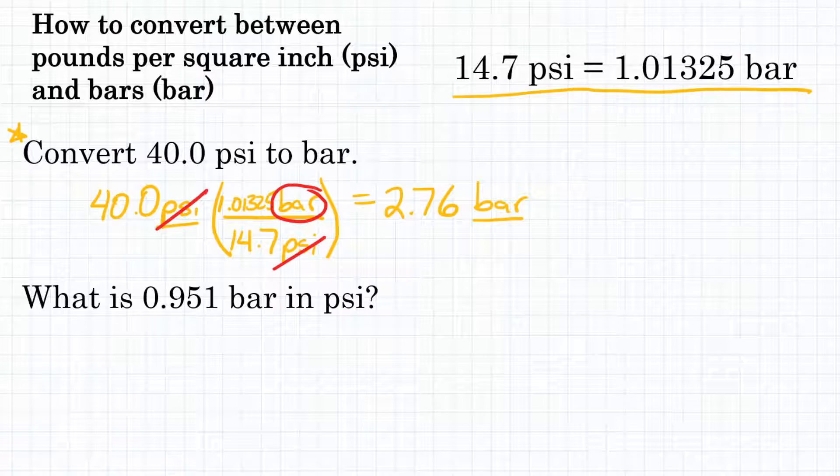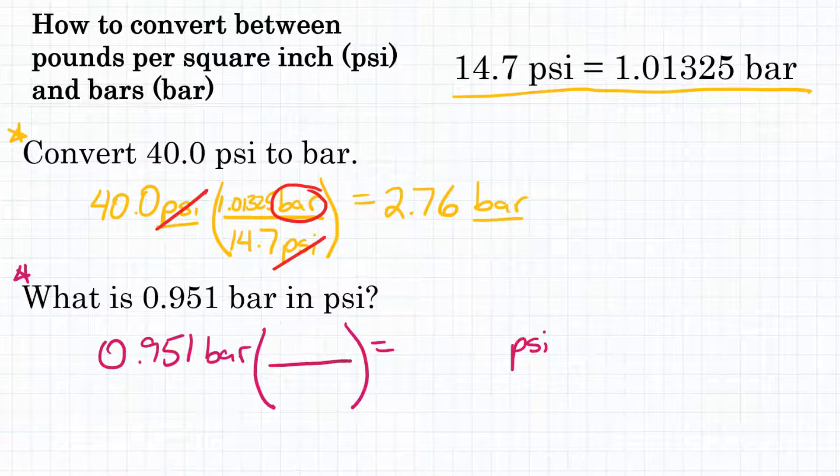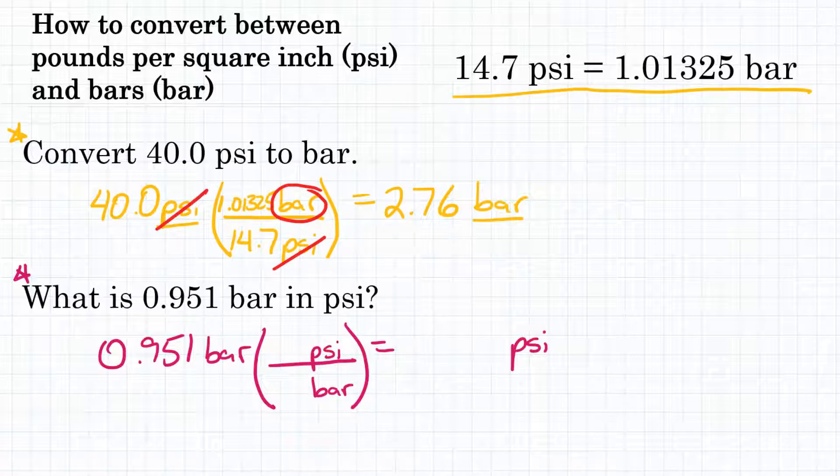All right, second problem here, what is 0.951 bar in PSI? So going the opposite direction. We're starting with 0.951 bar, and we want to figure out how many PSI that is. Again, we're going to multiply by a conversion factor, and this conversion factor is going to be the reciprocal of the problem above's conversion factor. So we are going to have bar on the bottom and PSI on top.